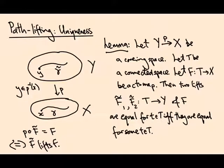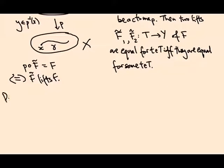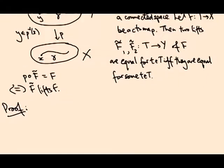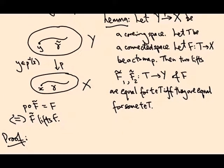Okay, so for the proof, well, we only need to check one of the two directions, because if they agree everywhere, then in particular they agree somewhere, as long as T is not empty. So we just need to prove that if they agree somewhere, they agree everywhere.